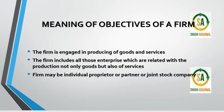First of all, let us see what the firm means. The firm is a single unit which produces goods and services. In the firm, there are all organizations and units that produce goods and services — that which produces things is a firm.